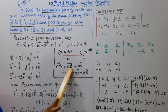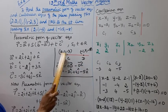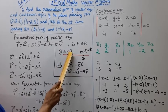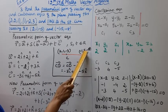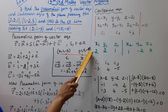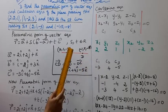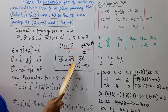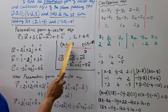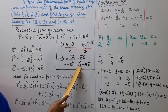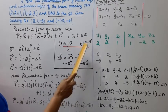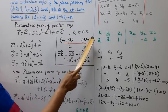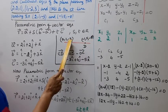CD vector equals OD vector minus OC vector. OC is 2i cap plus j cap minus 3k cap, and OD is minus i cap plus 5j cap minus 8k cap. Subtracting: i component is minus 1 minus 2 = minus 3i cap, j component is 5 minus 1 = 4j cap, k component is minus 8 minus (minus 3) = minus 5k cap.